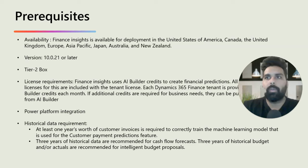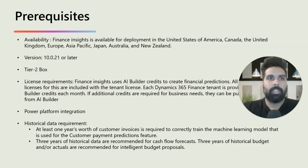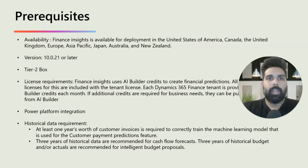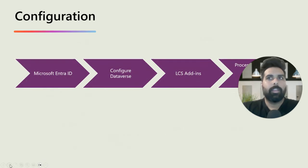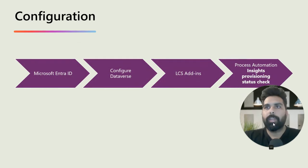The next requirement is historical data. All three features provide predictions, which require historical data. For customer payment prediction, you need at least one year's worth of customer invoices to train the model. For cash flow forecast, at least three years of data is recommended, and the same for intelligent budget proposals — three years of historical data to have the AI model trained and give you results.